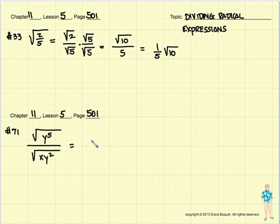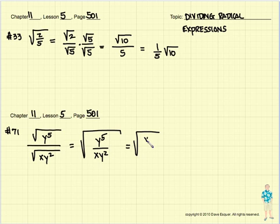Let's do number 71. This looks like if we make one huge radical, y to the fifth divided by xy squared. And we can simplify that even more as y cubed and x, y to the fifth divided by y squared. And what we can do is we can break it up into a numerator and into a denominator.